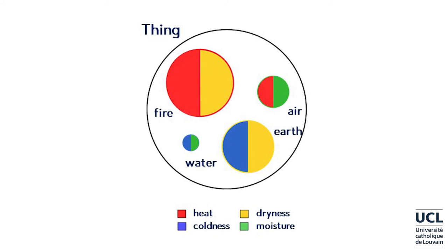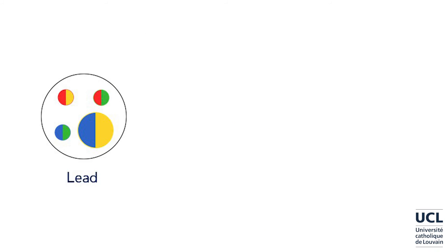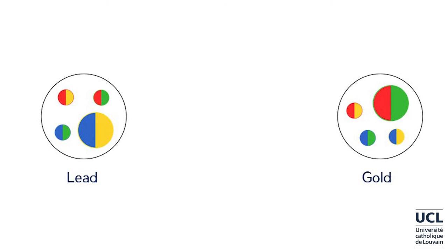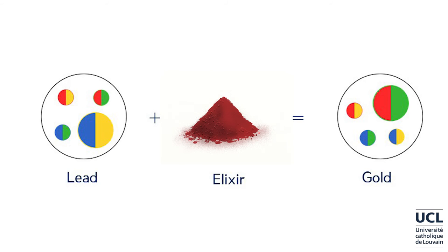Things differ from each other because of their proportion of the four elements. The elixir theory is quite a simple concept: since things differ according to their elementary proportions, changing the elementary balance of a thing will change the thing itself. So, if we know the elementary balance of lead and that of gold, we can prepare a compound of the four elements with a certain balance, which will, when added to lead, make it become gold. This compound is made by distilling certain substances, and it is called an elixir. It is actually a powder in Arabic alchemy, and did not become the ideal liquid we all imagine before the idea had penetrated the Latin West.